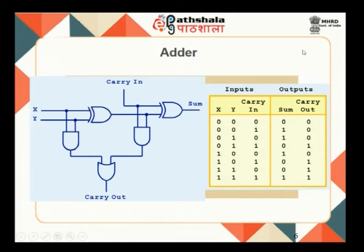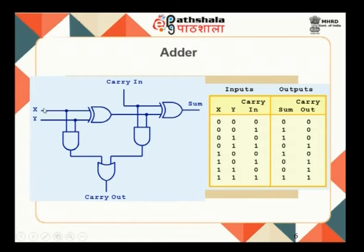The truth table of a full adder circuit has been shown here, and this is the circuit of a full adder. If you look at the sum bit getting generated, the sum is an XOR of these three bits — an XOR of X, Y, and the carry in. The carry is generated as a sum of products terms according to this truth table.